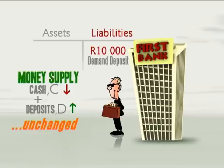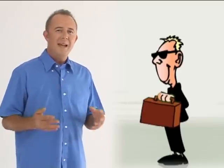But what is the bank going to do with this 10,000 Rand? Do they just lock it in a safe until Mr Smith wants it back? No. Banks, like any other business, want to make a profit. And one of the ways they do this is by lending Mr Smith's money to other clients and charging them a higher interest rate than what they've offered to pay Mr Smith. So banks won't keep all the money, but will rather lend out some of it so that they can also earn interest.